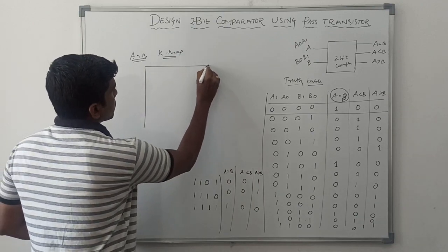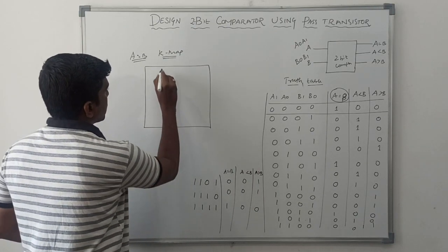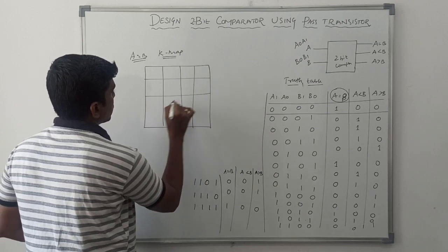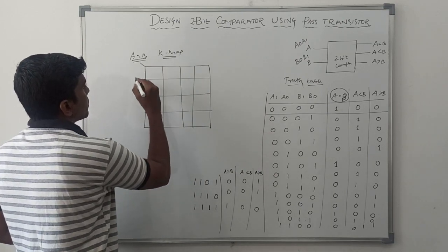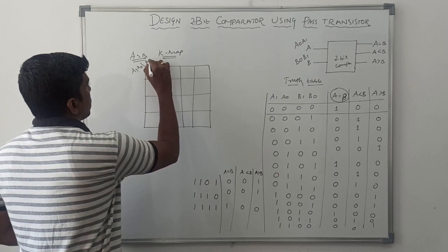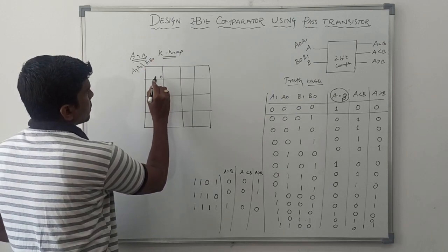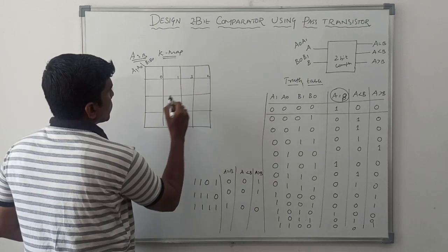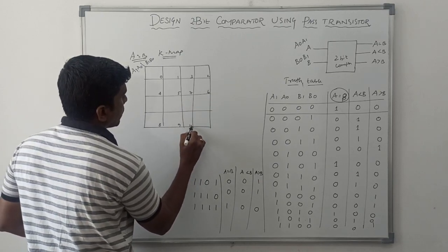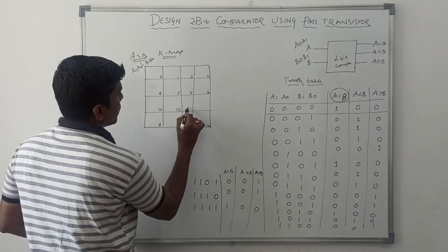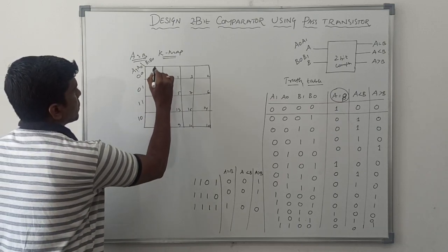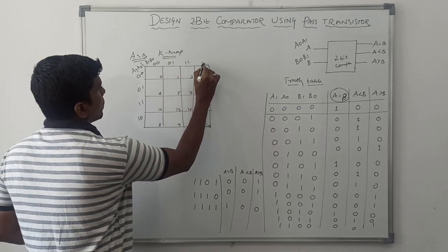It is a 4-variable KMAP, so we use 16 cells. This is a KMAP we already studied in digital electronics. The variables are A1, A0, B1, B0. The cell numbering is 0, 1, 3, 2, 4, 5, 7, 6, 8, 9, 11, 10, 12, 13, 15, 14. The output values filled in are: 0, 0, 0, 1, 1, 1, 1, 0, 0, 0, 0, 1, 1, 1, 1, 0.